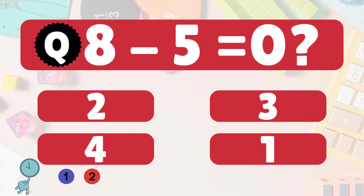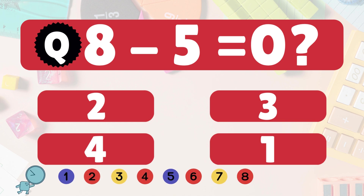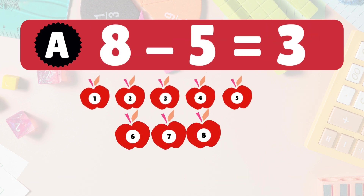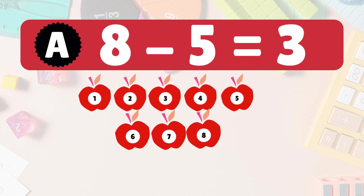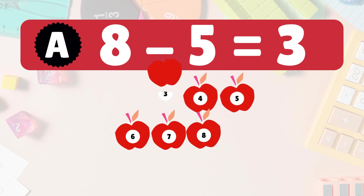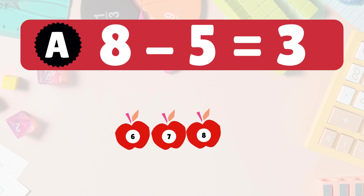8 minus 5 equals what? Let's count it out. We have 8 apples. Take away 5 apples: 1, 2, 3, 4, 5. How many are left? 1, 2, 3. That's right, 8 minus 5 is 3. Great job.